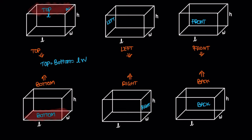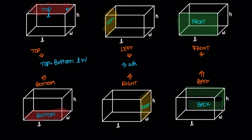Next, the left and right faces also have the same area. The area of left and right deals with W and H, so the area of this portion is W times H. Next are the front and back faces. The area of the front and back is length times height.